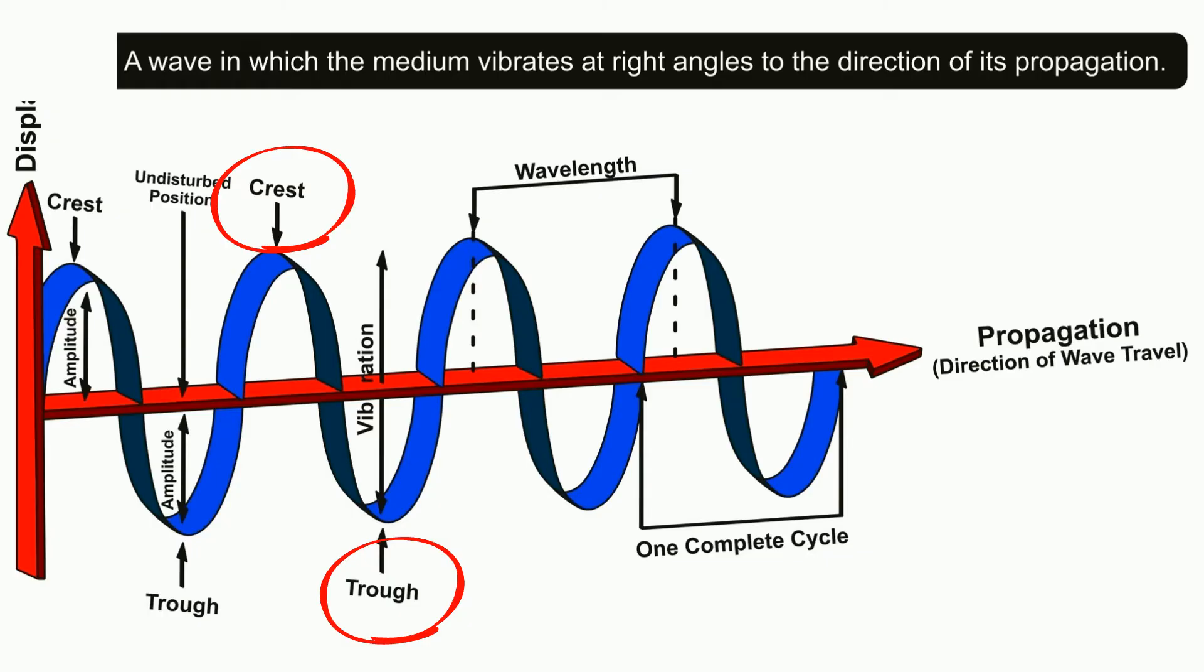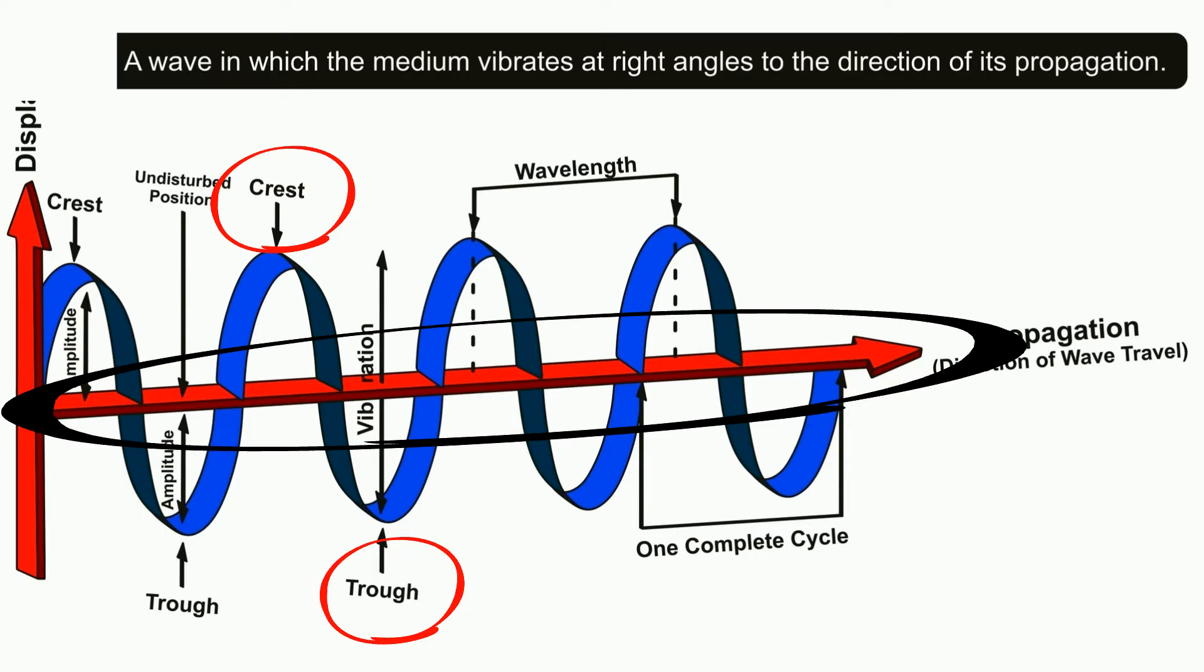The resting point, also called the undisturbed position, is the position the medium would take if there was no wave. It is represented on a graph by a line at the center of the wave.